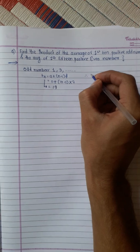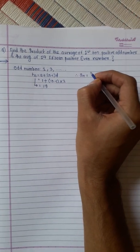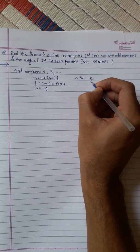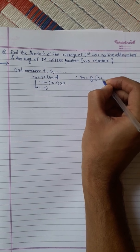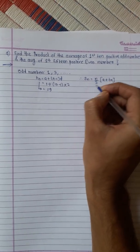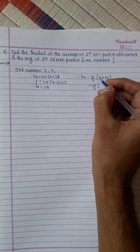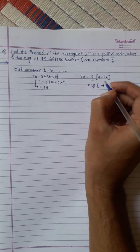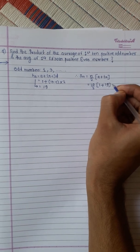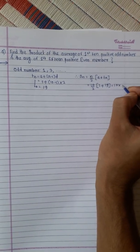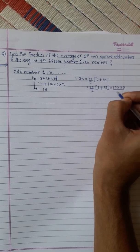Therefore, the sum equals n by 2 into (first term plus last term). Number 10 divided by 2 into first number is 1 plus last number is 19. This is 10 into 20 divided by 2.